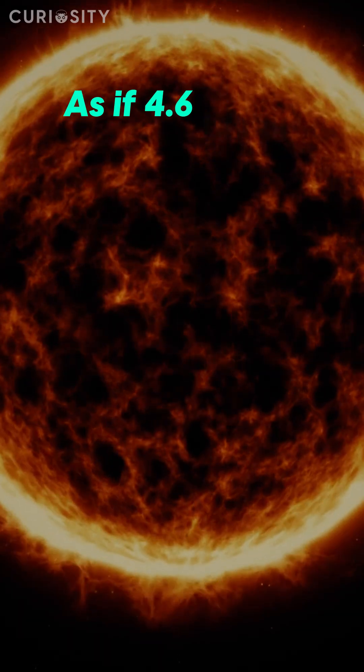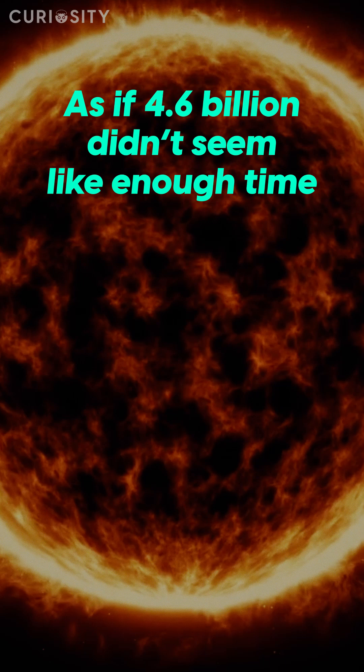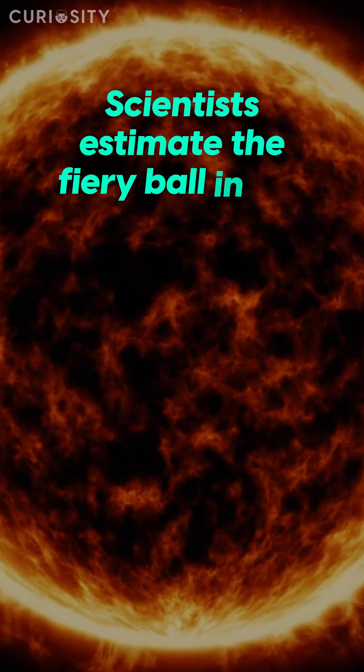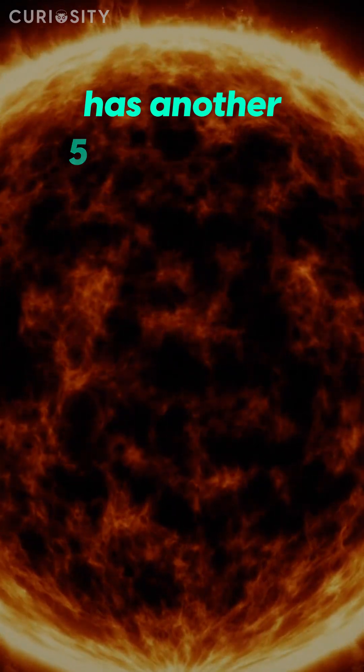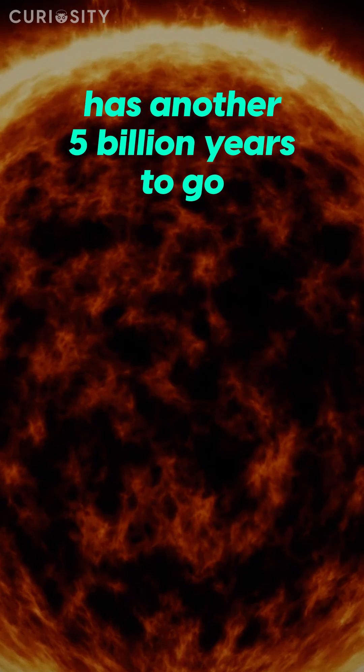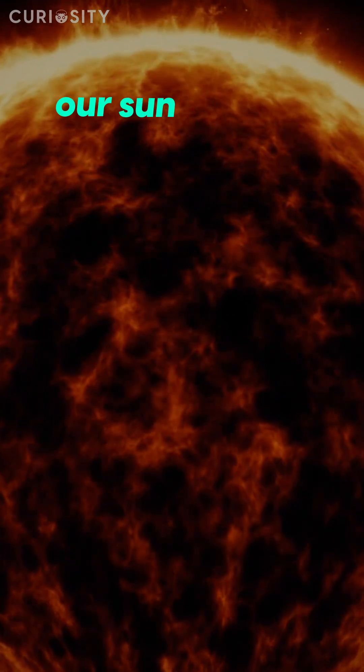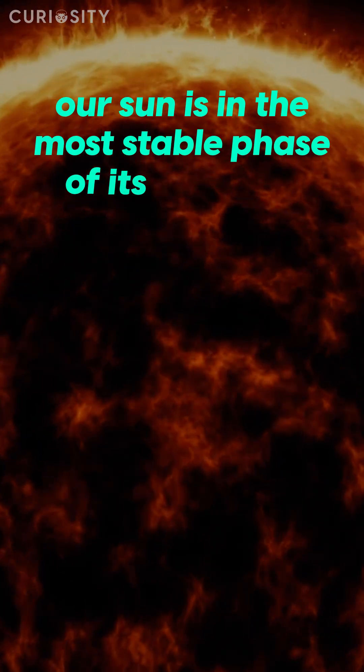As if 4.6 billion didn't seem enough time, scientists estimate the fiery ball in the sky has another 5 billion years to go. Right now, our Sun is in the most stable phase of its life cycle.